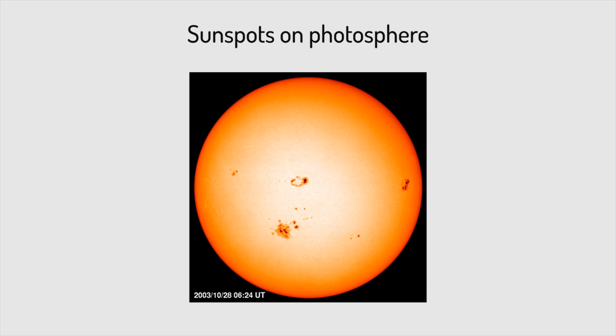Sunspots are spots that have strong magnetic fields and cooler plasmas, which appear as darker spots on the surface of the sun, the photosphere.